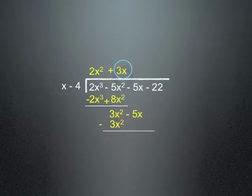Now we take 3x times negative 4 and put it right there which is negative 12x. Again we factor in the negative sign which makes this 3x squared plus 12x. And negative 5x plus 12x is equal to 7x.